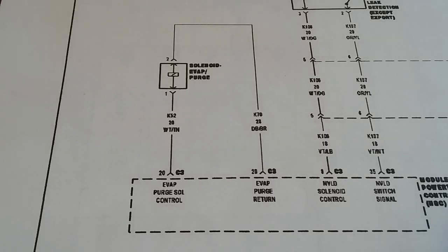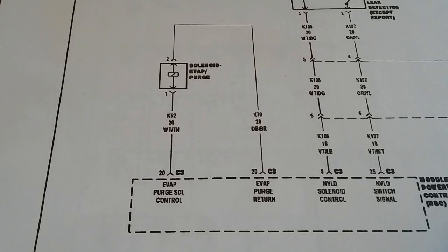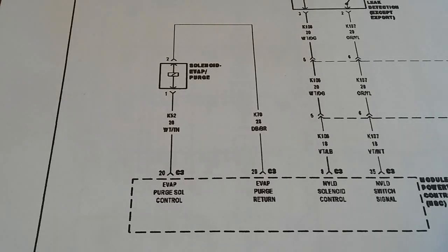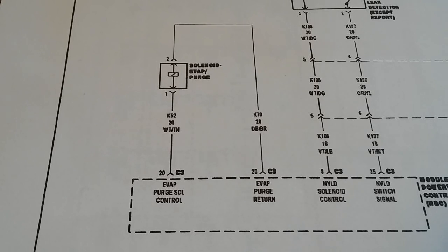I also did a video on a Dodge Ram where I diagnosed a P0440 and a P0456, and I performed voltage checks and used a vacuum pump on that one. For this one I'll also be using a vacuum pump and may or may not use a voltmeter to check the voltage on both wires, depending on the results of the vacuum test. If you want to learn how to do it, check out that video on the Dodge Ram.